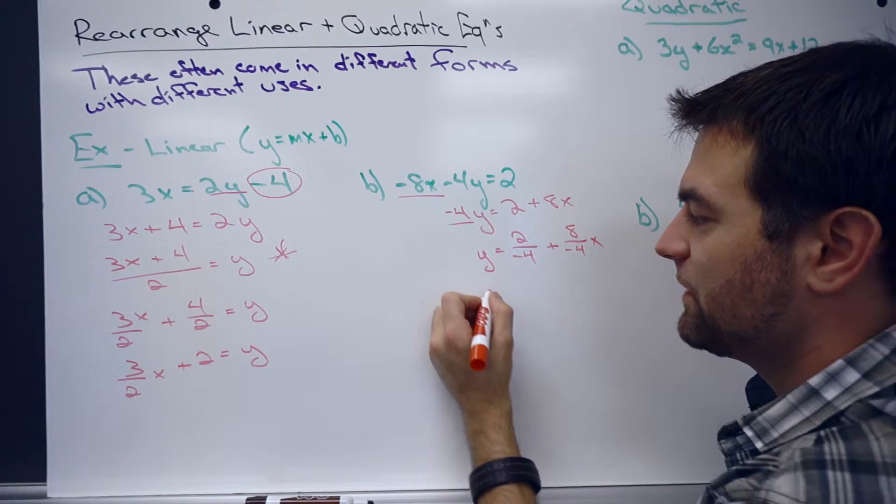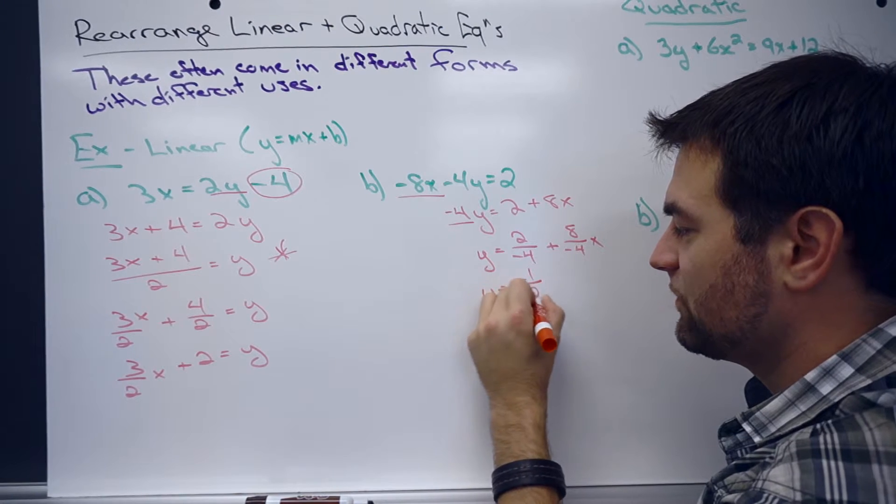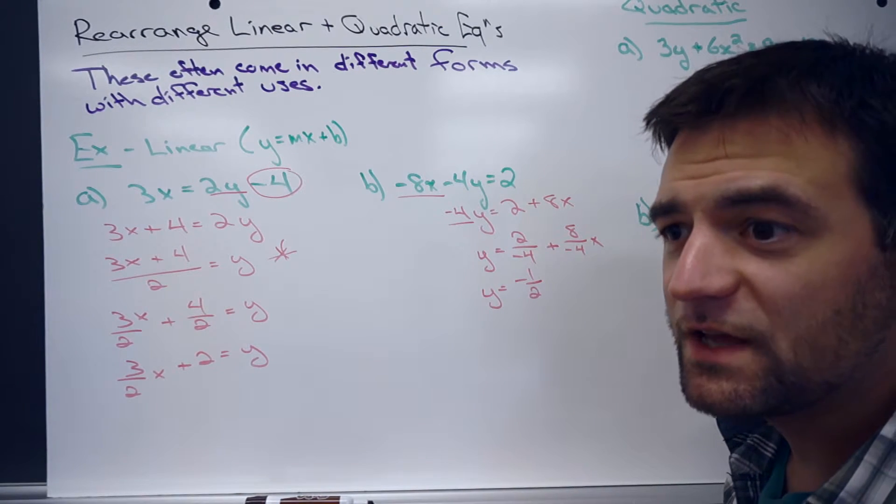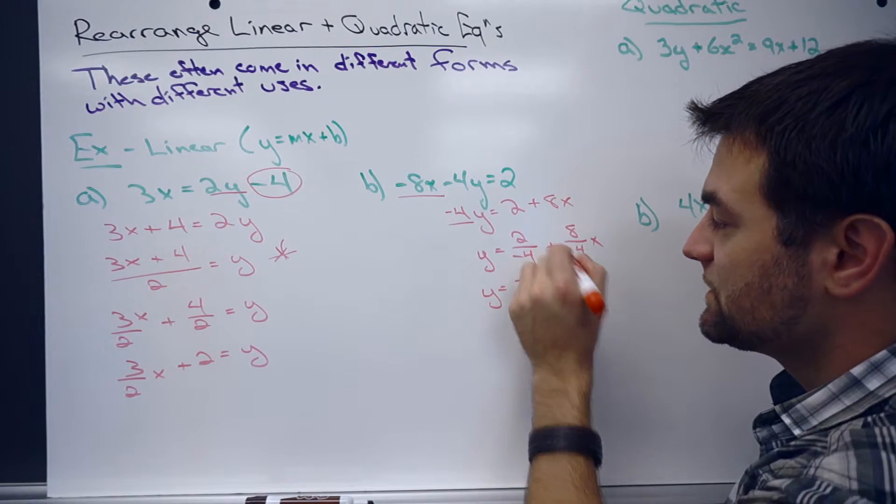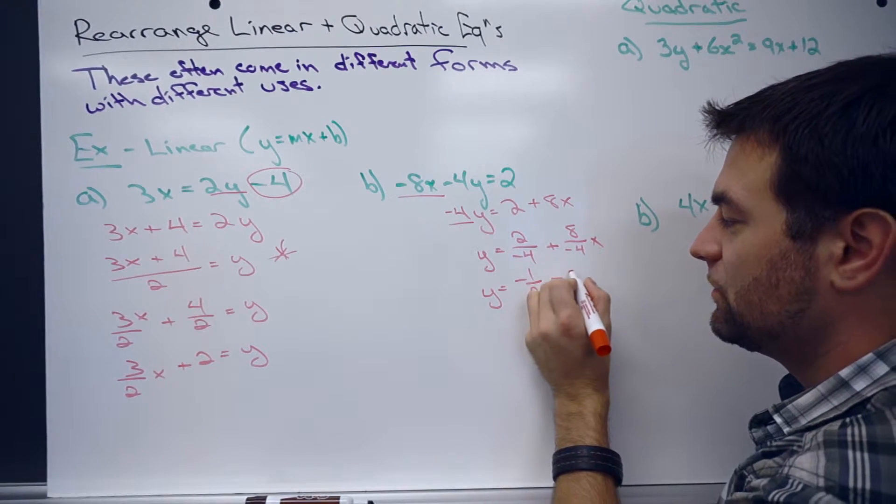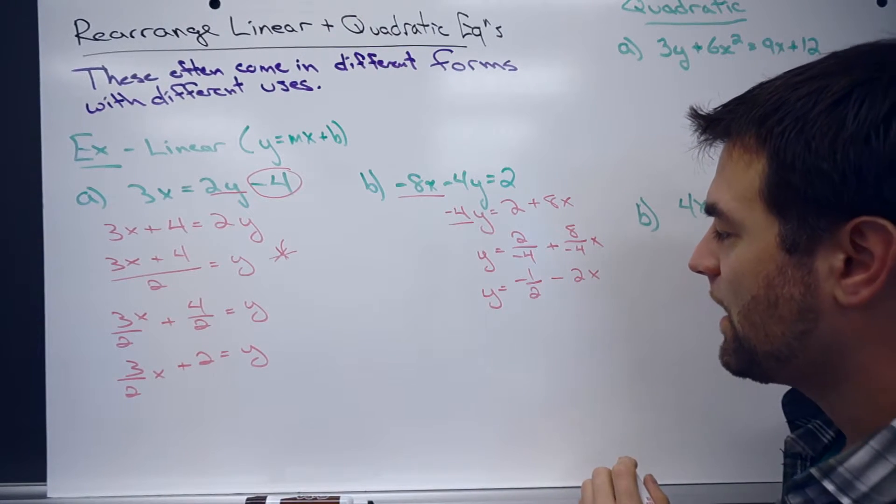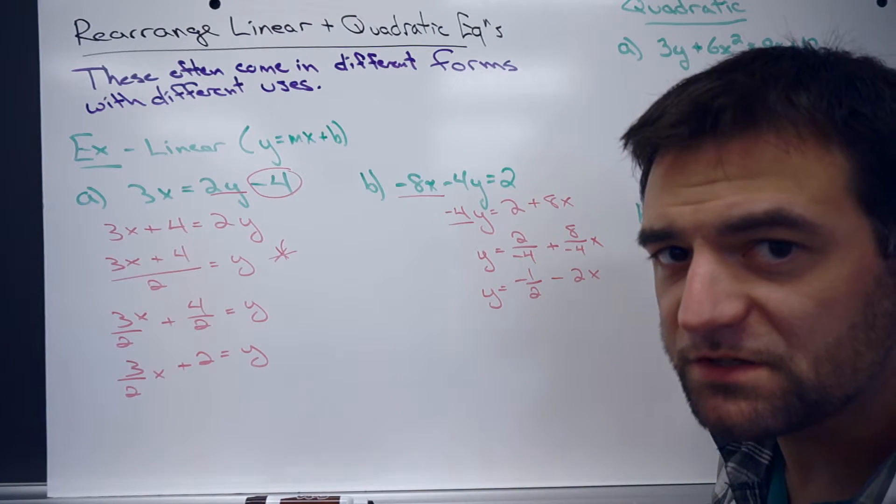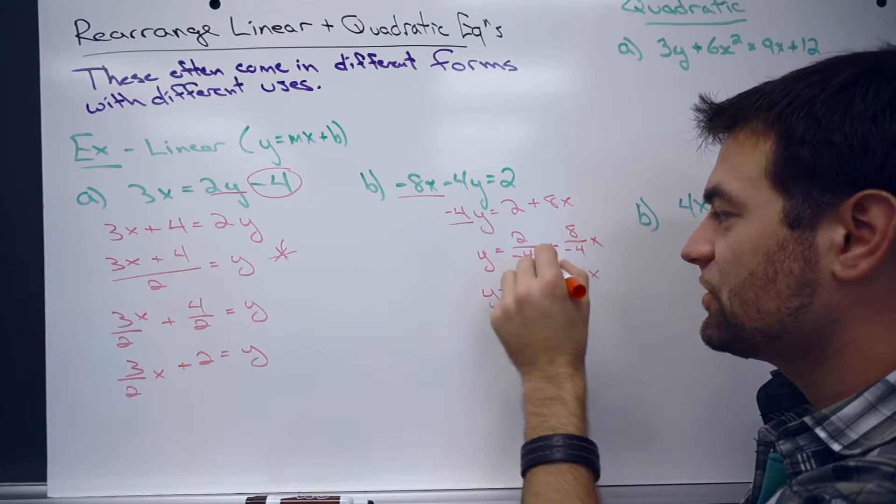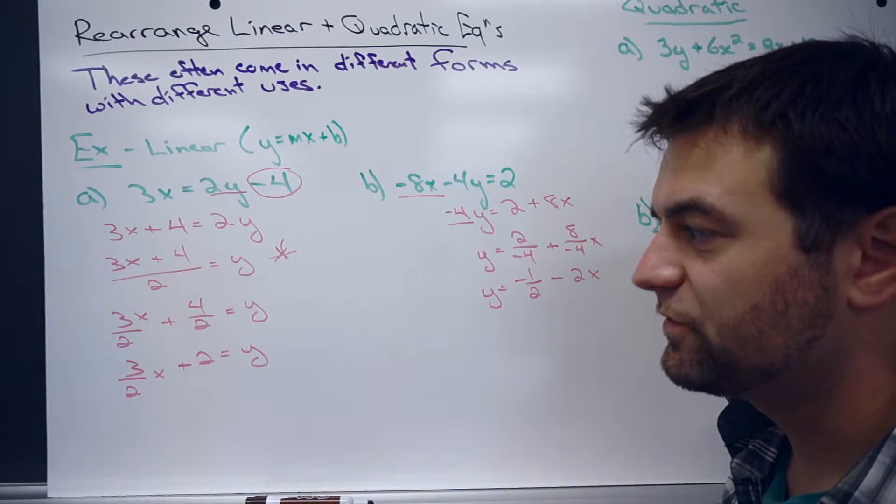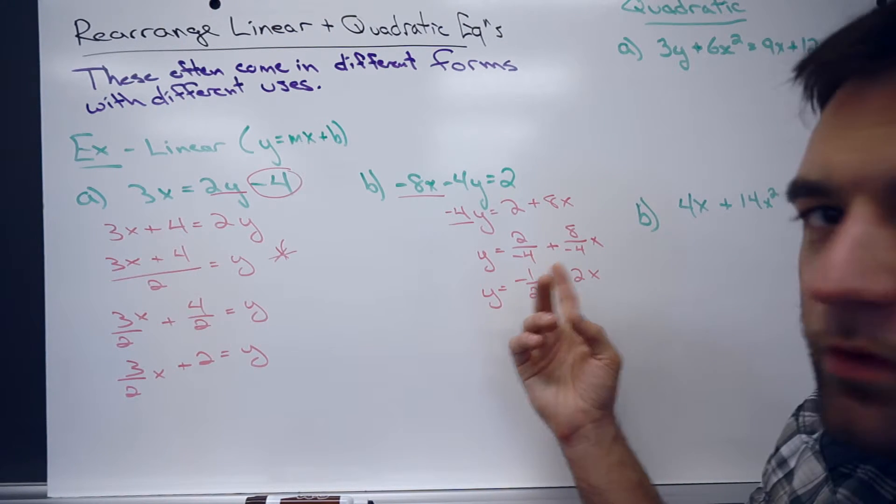2 divided by negative 4, that's going to give us negative 1 half. And 8 divided by negative 4 is going to give us negative 2. And since it's adding a negative 2, that's just like subtracting 2. And we can write it negative 1 half minus 2x. So that's the linear equations. Again, making sure you're breaking that up over the numbers if you have to divide there. Be careful with your signs.